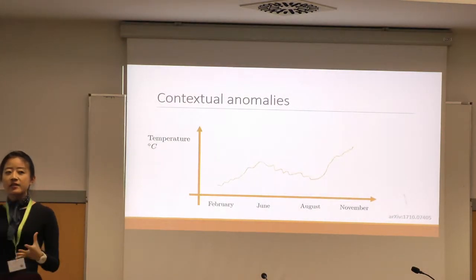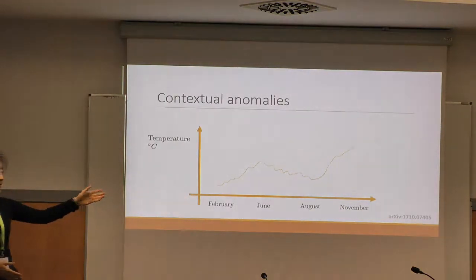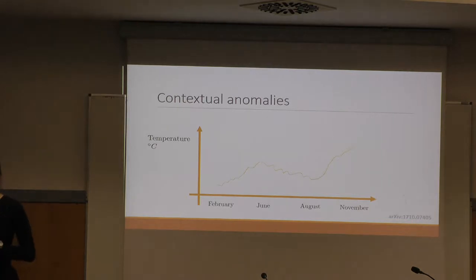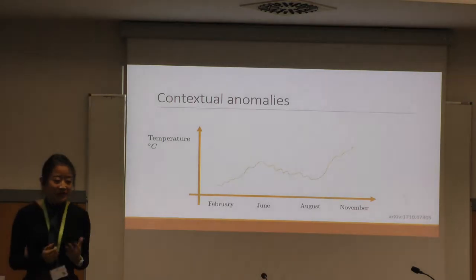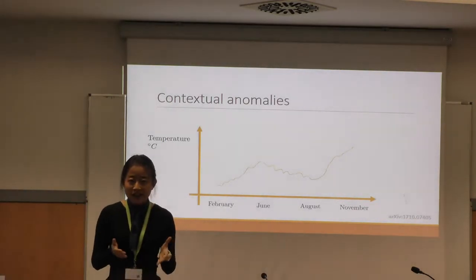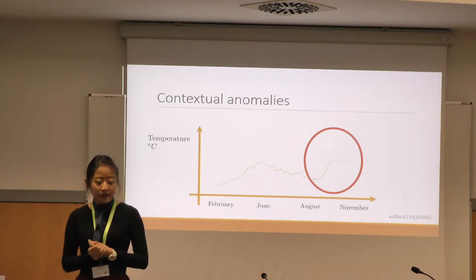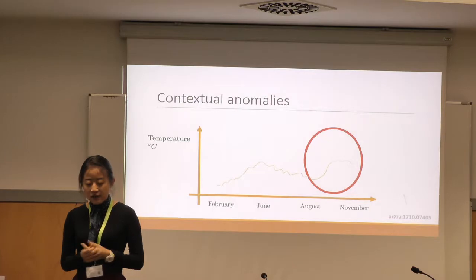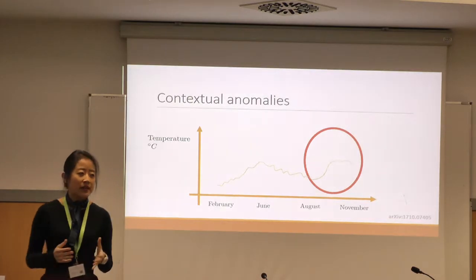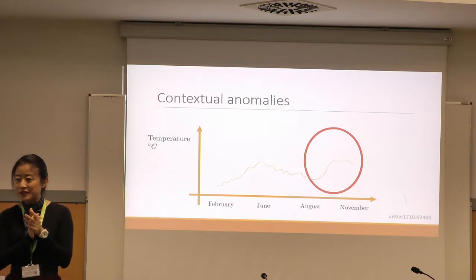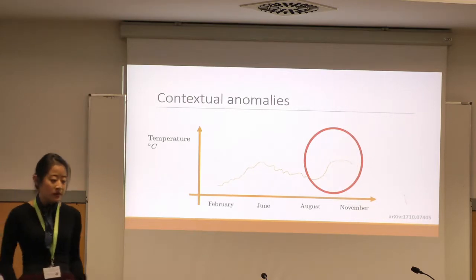Contextual anomalies are considered anomalies only within a given context. For example, if you're in a place where the peak temperature is in June, but in November you also have a high temperature — that's unusual for the context of November, so we call that an anomaly. These types of anomalies usually come up in time series, and are very much related to the change point problem, which John Gail and Ramon will be talking about in the quantum context.